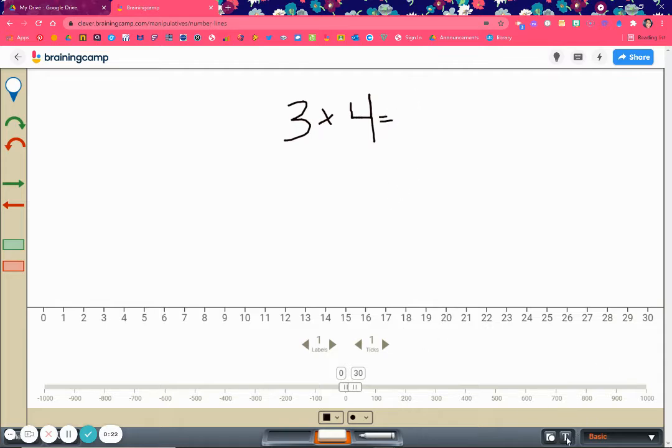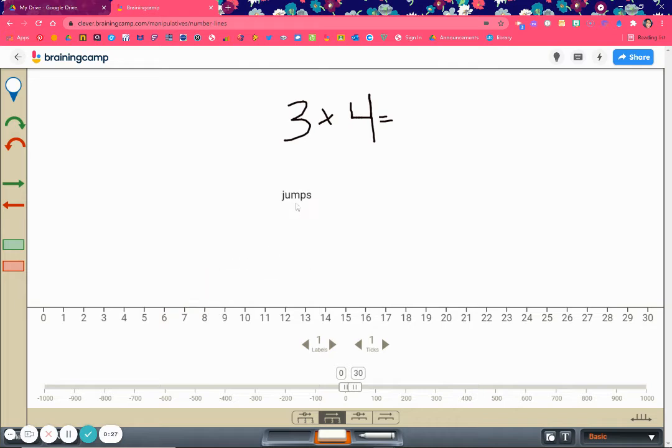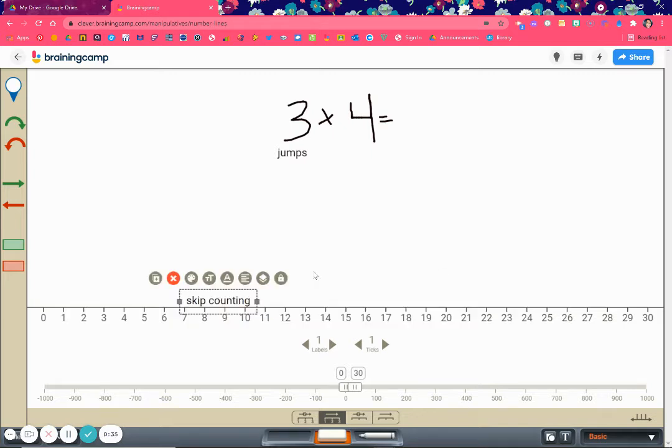So your first factor is going to be your jumps. Your first factor will always be your jumps, and your second factor will always be what you're skip counting. Alright, so just remember that. First factor is your jumps, second factor is skip counting.